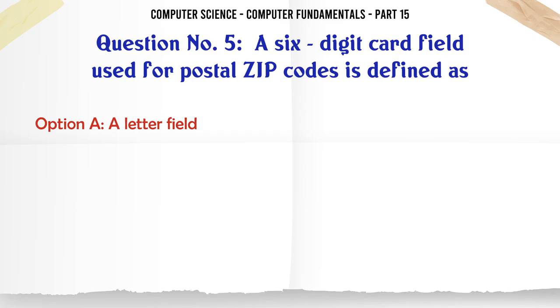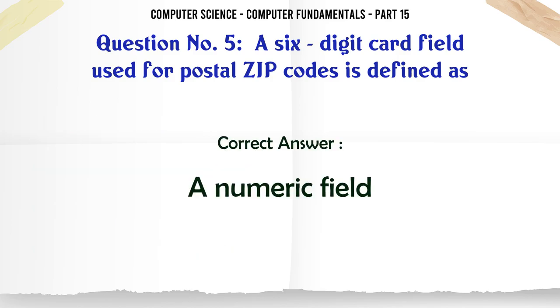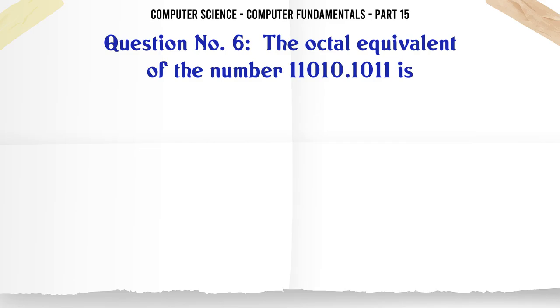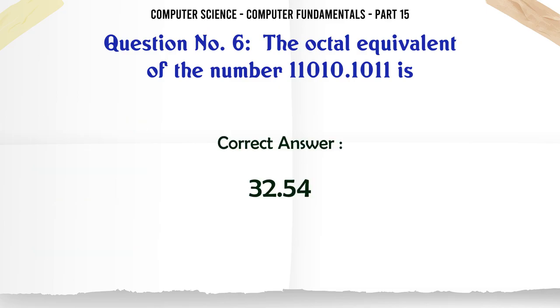A six-digit card field used for postal zip codes is defined as: A. A letter field B. An alphabetic field C. A numeric field D. An alphanumeric field. The correct answer is A numeric field. The octal equivalent of the number 11,010.1011 is: A. 32.54. The correct answer is A. 32.54.